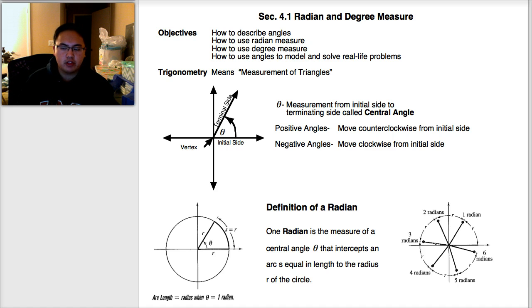So we're going to start off with radian degree measure. I'm not too sure how much trigonometry and practice you got in geometry and algebra 2, so we're going to start basically from the ground floor.